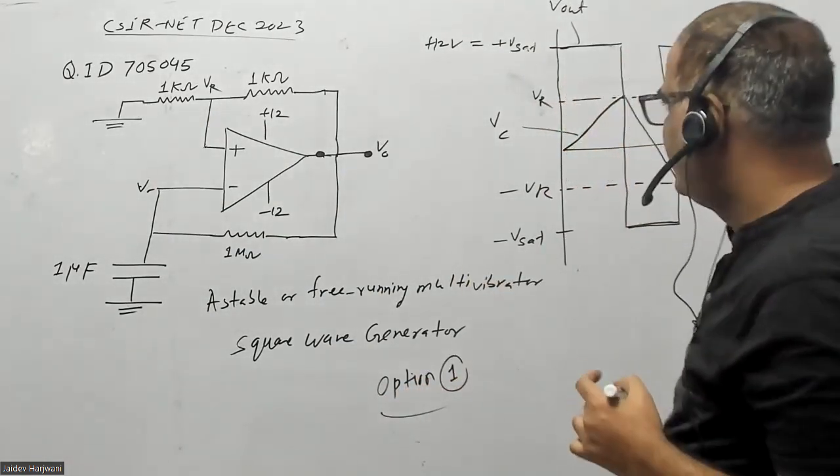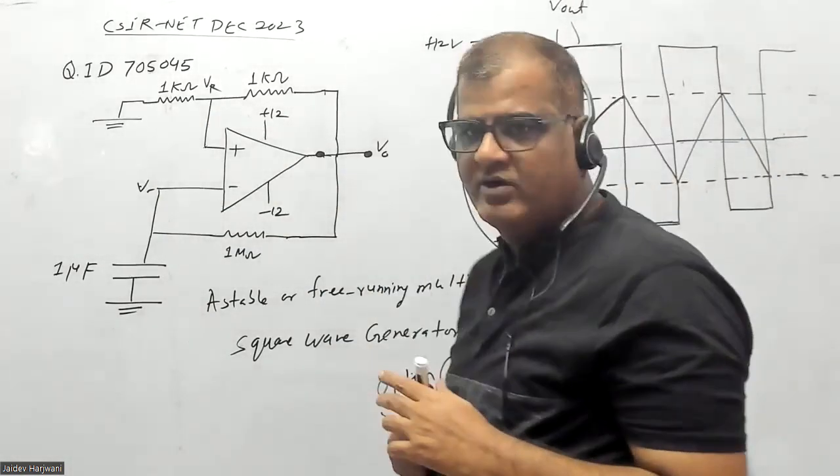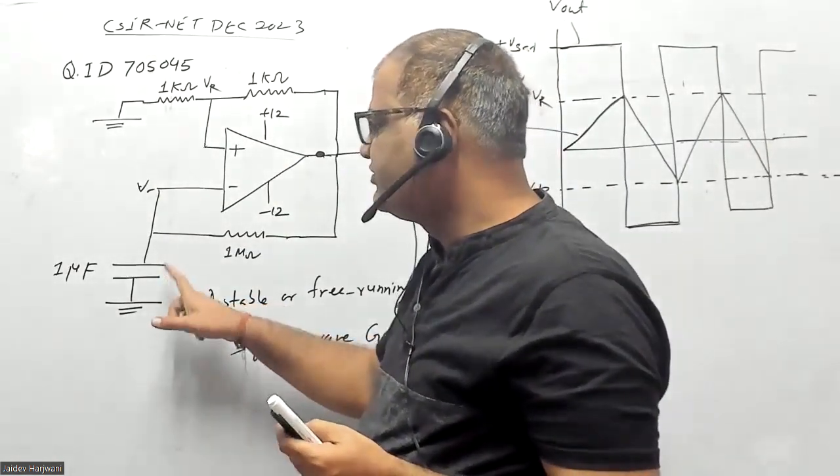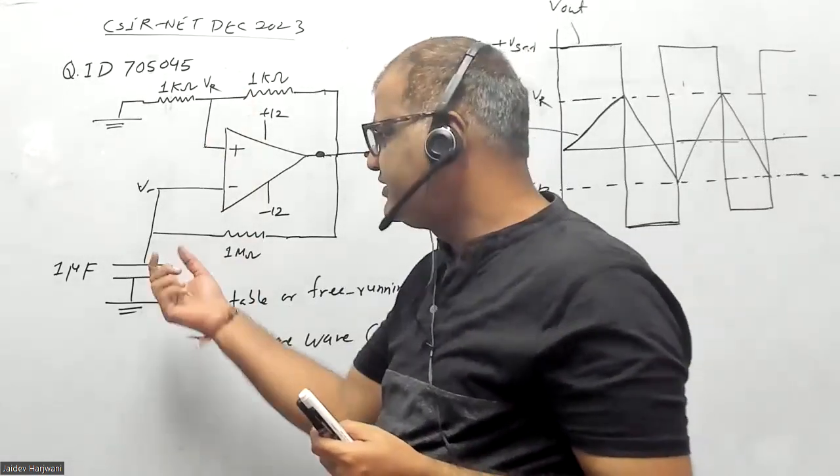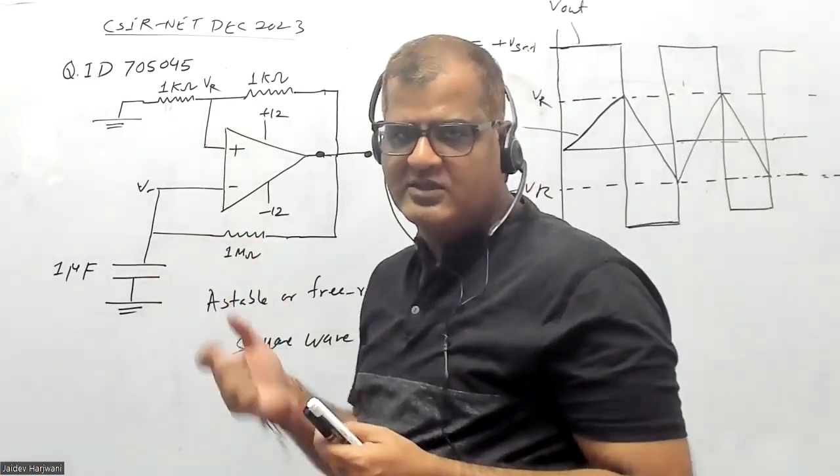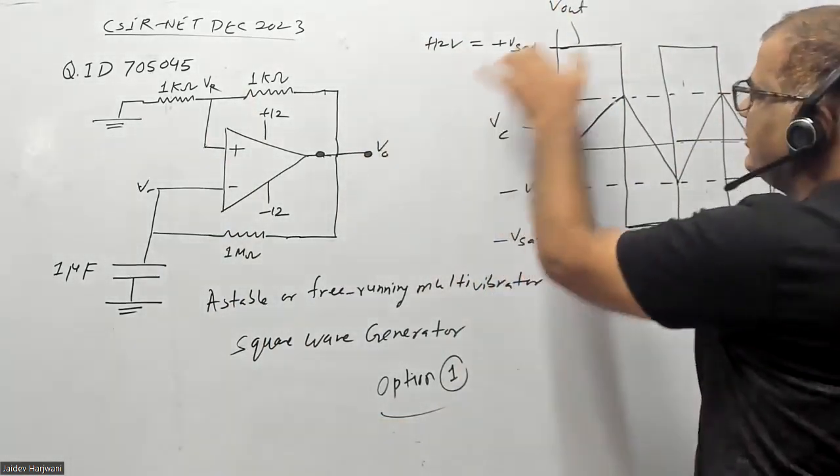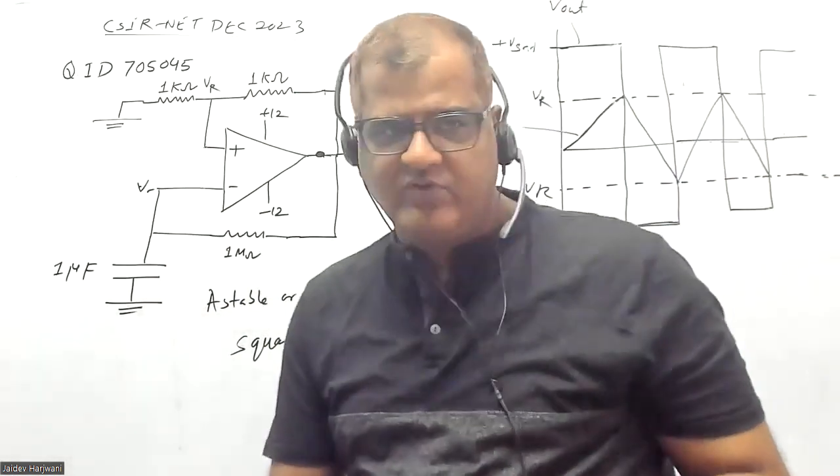Option two is triangular wave, so that triangular wave is not the output of V naught. That is the voltage at VC, how the capacitor is charging over time. It takes some time to charge, so whenever it takes some time to charge, the output voltage will be constant. Option one is the correct answer. Thank you very much.